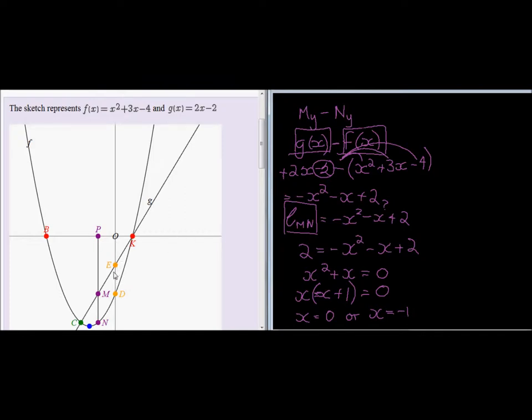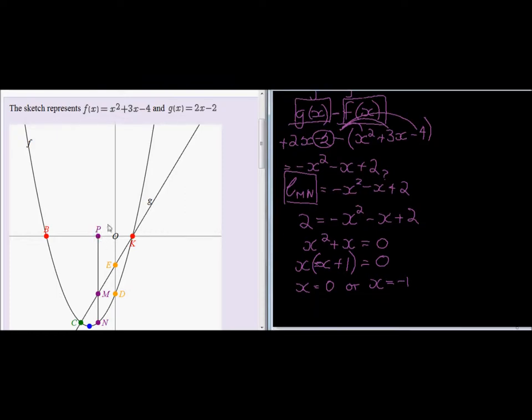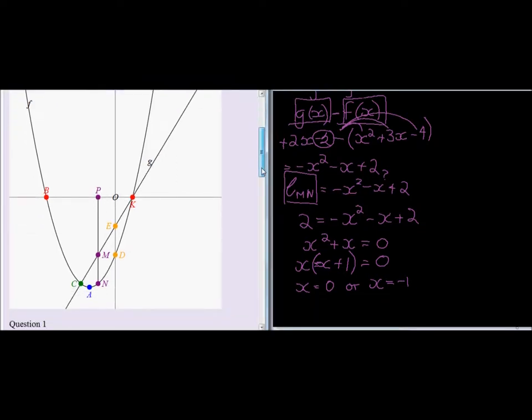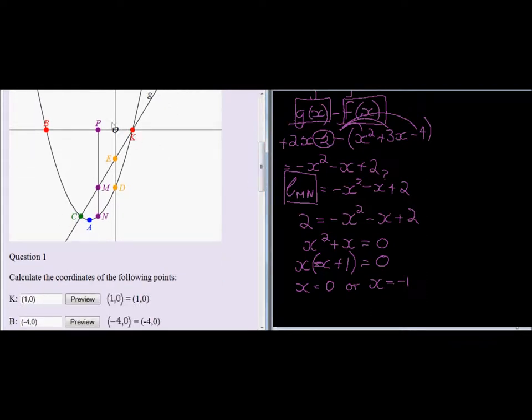Now we can see on our graph that means that this distance here will be 2 when x is equal to 0, then the distance between the two graphs will be 2. And the distance here will also be 2. So which one can it be when x is equal to negative 1 or when it's equal to 0? Well, because P is on the negative side of the x-axis, it will happen when x is equal to negative 1, which means the distance of OP will be equal to 1.